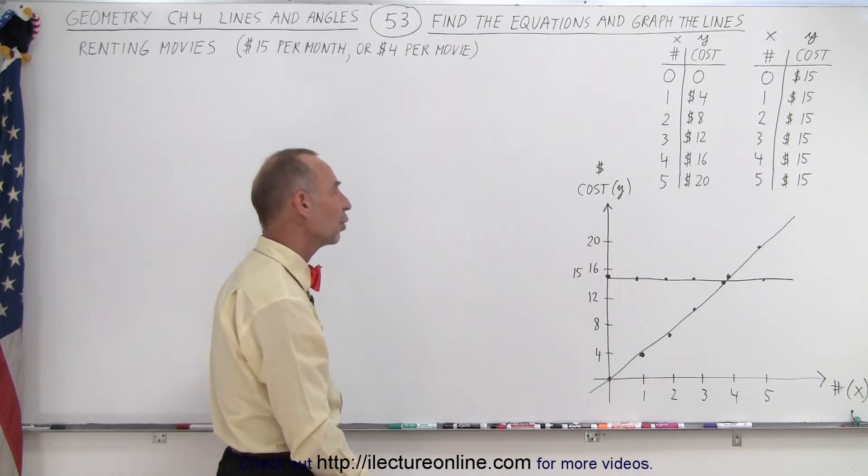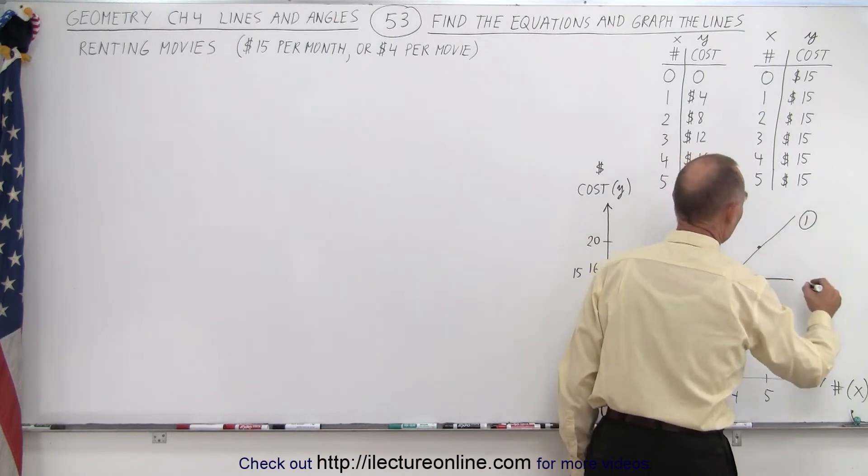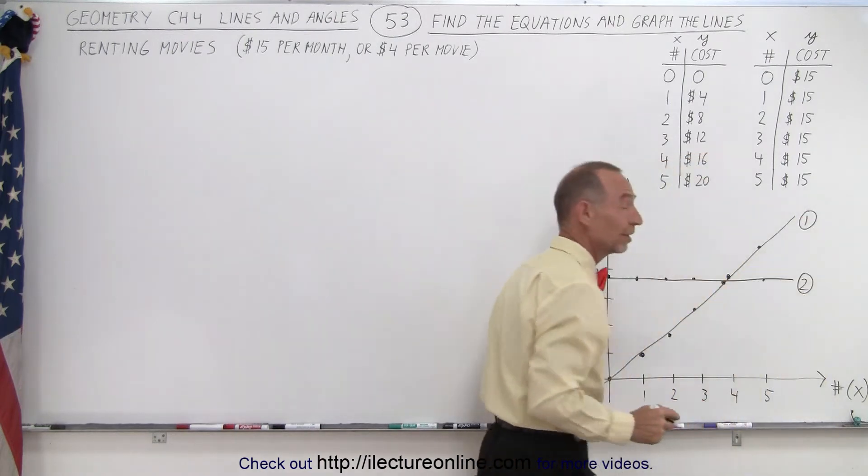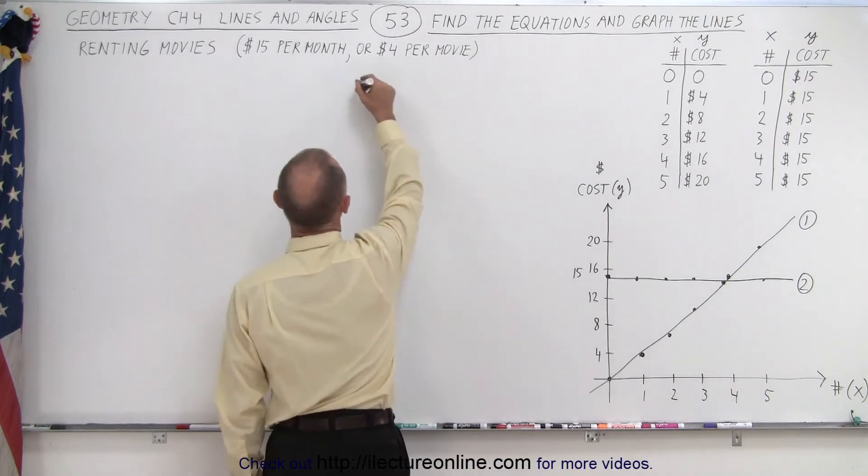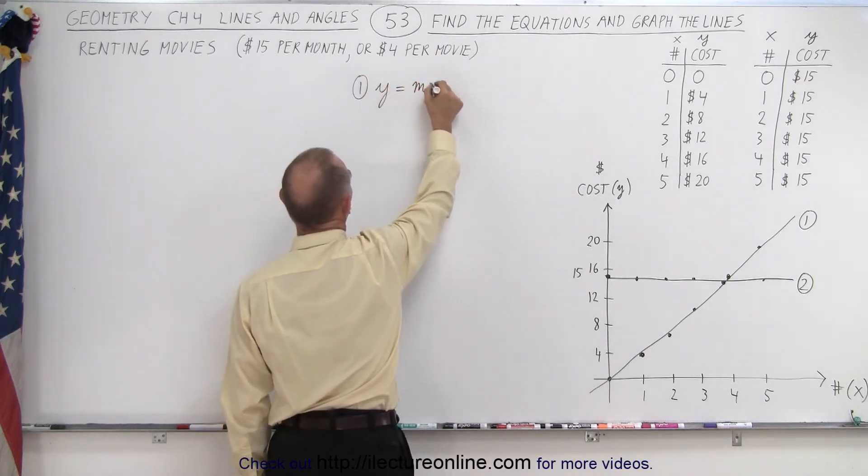So how do you find the equations? I'm going to label the equations as equation one and equation two. So let's first graph equation number one. For equation number one, we know it's going to look like y equals mx plus b.